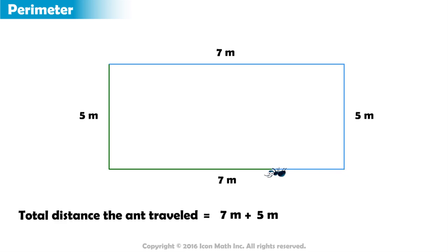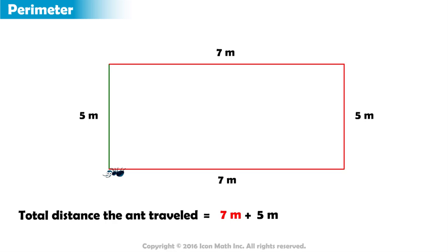The ant now faces to the left and starts moving in a straight line until it covers the entire length of the bottom side of the rectangle and reaches the bottom left corner. At this point, the ant has traveled a total distance equal to the length of the top side, plus the right side, plus the bottom side of the rectangle, or 7 meters plus 5 meters plus 7 meters.